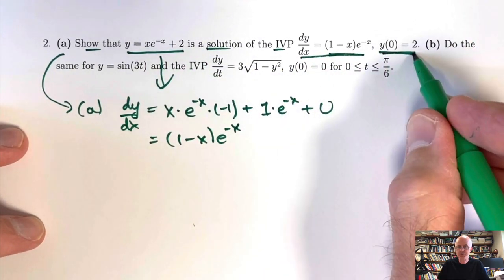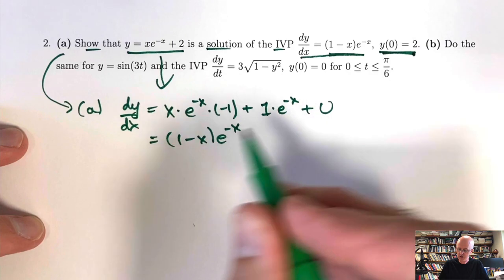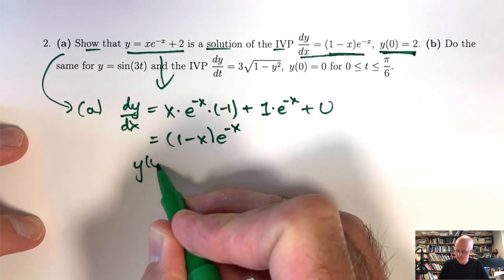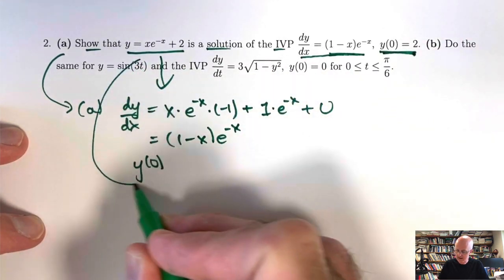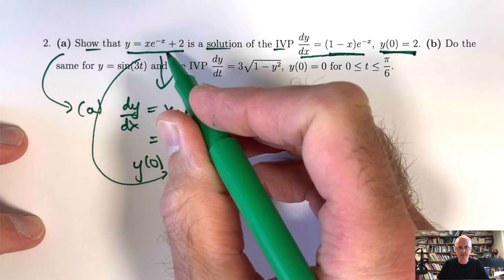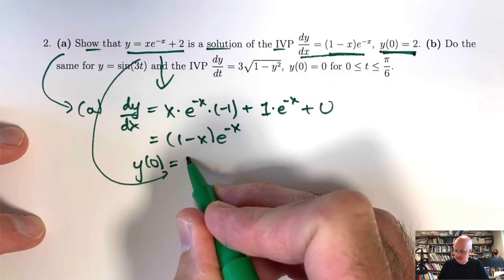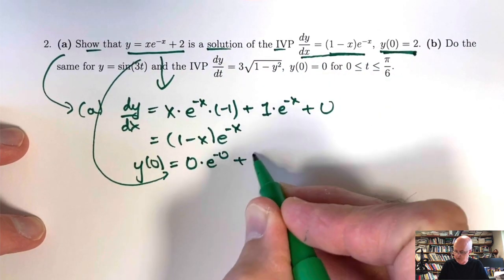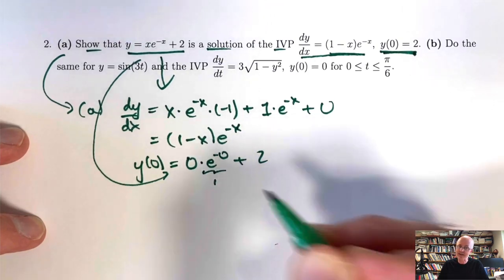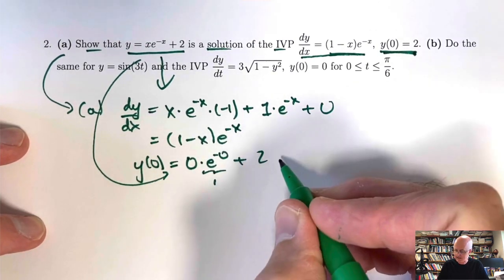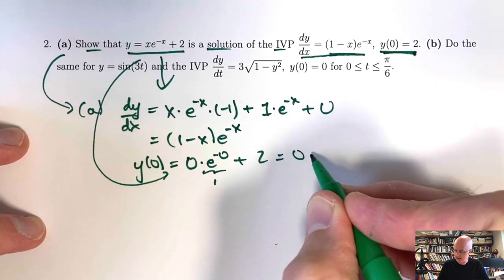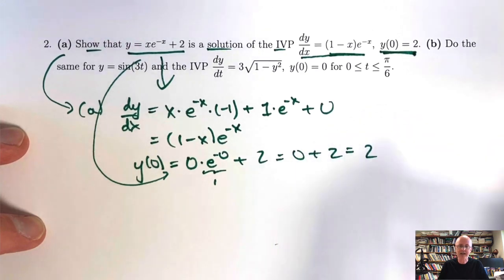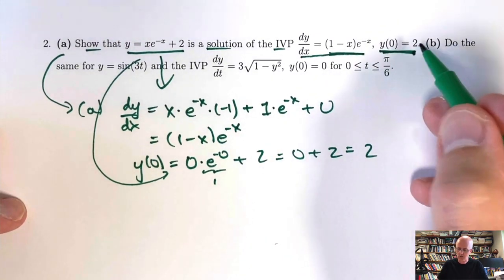We also want to check the initial condition. Plug x = 0 into the proposed solution: you get 0·e^0 + 2. e^0 is 1, but 0 times 1 is still 0, so the result is 2. Yes, we are satisfying the initial condition — when x is 0, y is 2.